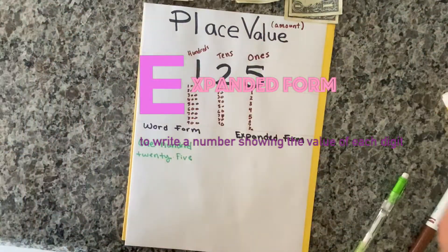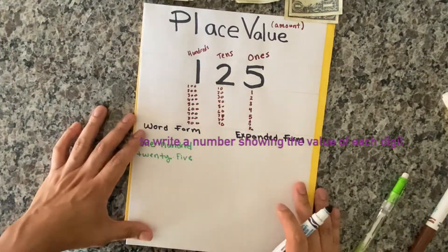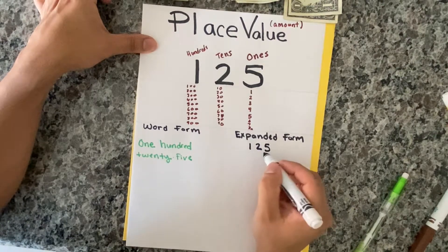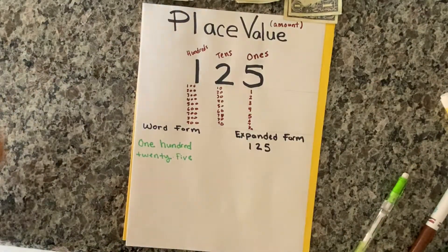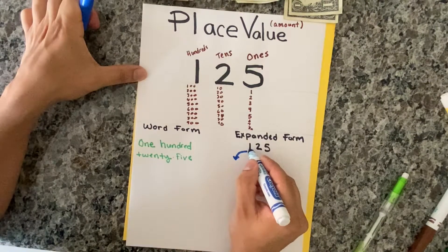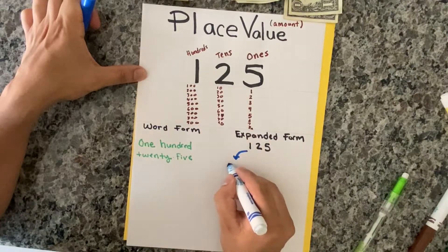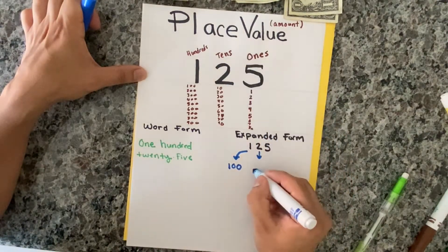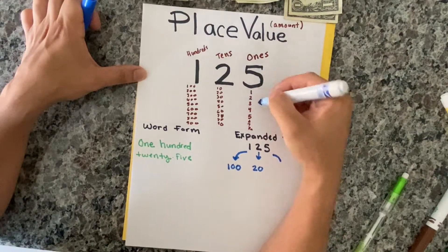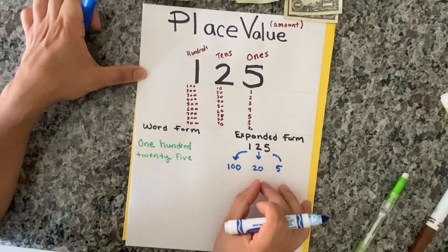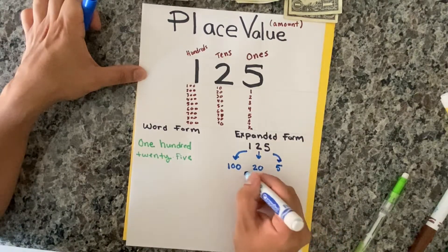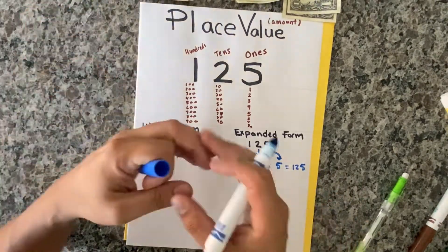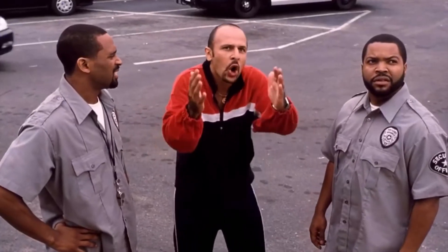Expanded form — it likes to expand itself and show you its real identity. Here's the number 125. The one is really in the hundreds spot, so it's really 100. The two is really in the tens spot, so it's 20. And the five is just in the ones — just a regular five. You put plus signs between them to show that if you add them all up, it equals 125. That's expanded form.